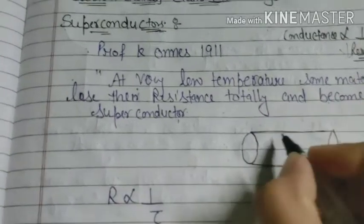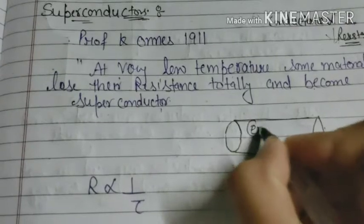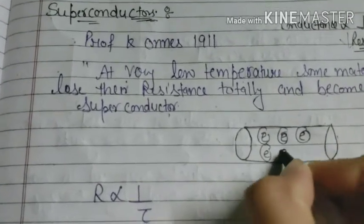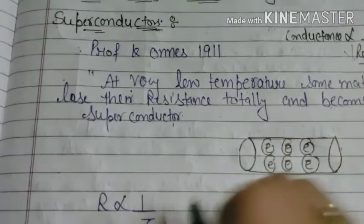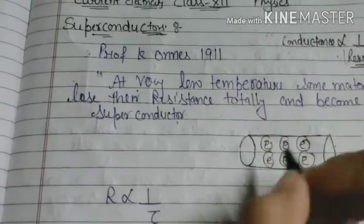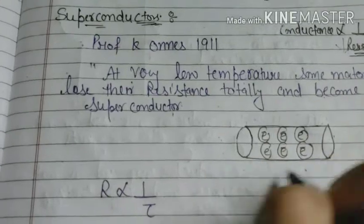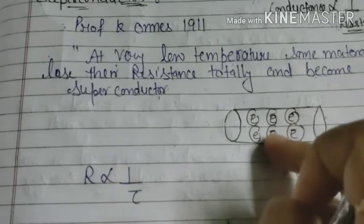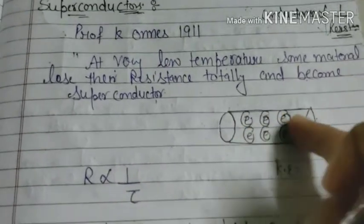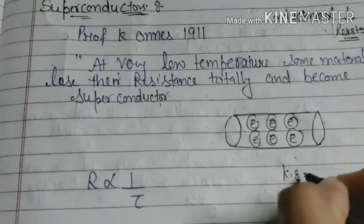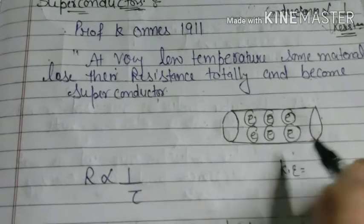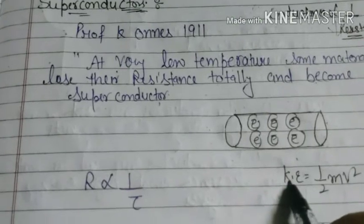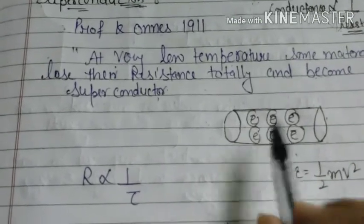Conductivity is not just about the number of electrons — it is about how electrons collide. The electrons undergo collisions, and the kinetic energy of the electrons is ½mv². The question is: how can we increase or manage this kinetic energy?